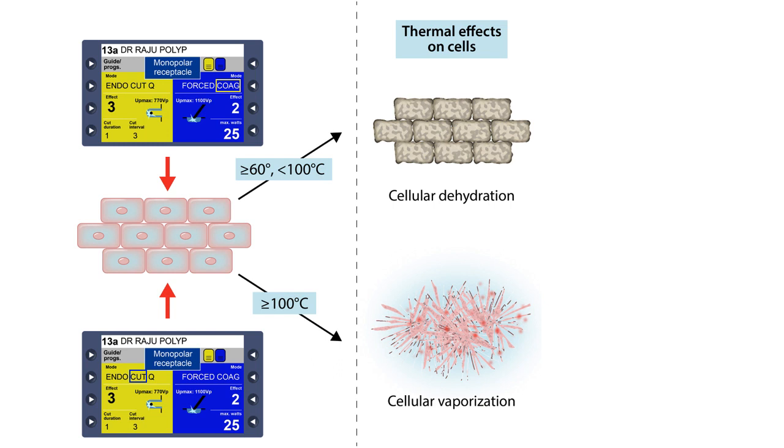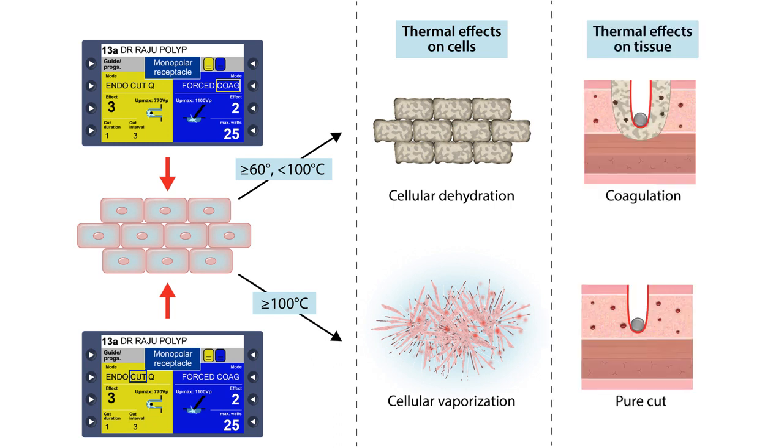With the cut current, the temperature rises above 100 degrees centigrade very fast, resulting in cellular vaporization that ultimately leads to a pure cut. When you use coagulation, the temperature rises slowly to between 60 to 100 degrees, and that slow cooking results in dehydration and coagulation of protein.